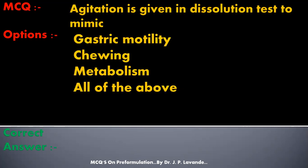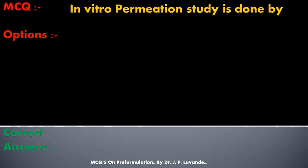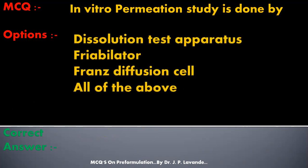Next multiple choice question: Agitation is given in dissolution test to mimic — options: Gastric motility, Shearing, Metabolism, All of the above. Correct answer is gastric motility. Agitation is given in dissolution test to mimic gastric motility.